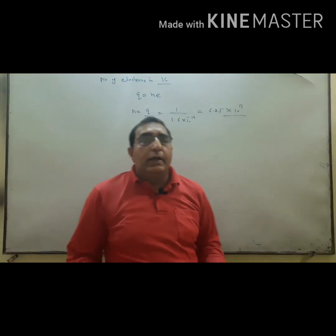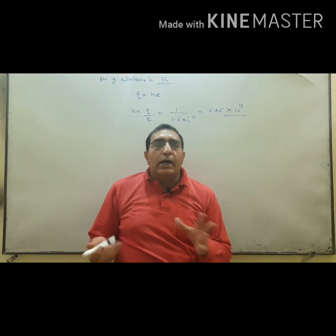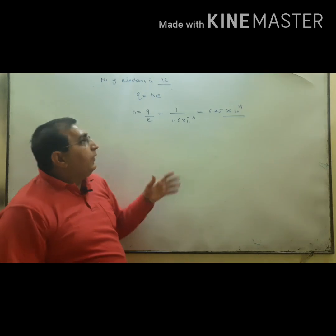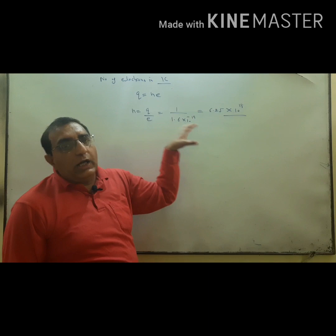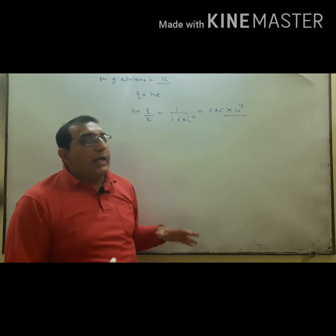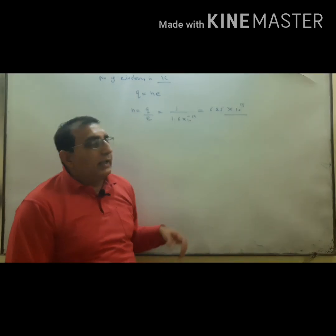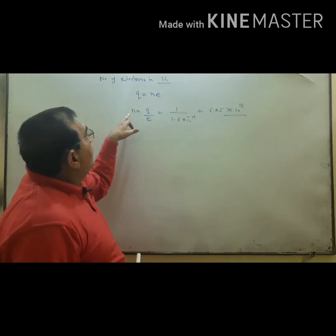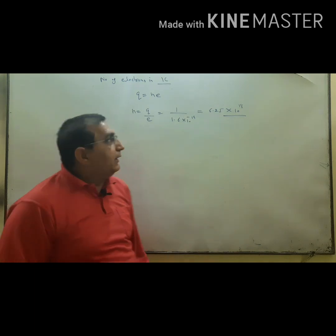What is charge? Charge is a physical quantity which tells how many electrons are transferred from one body to another. Positive charge indicates deficiency of electrons, and negative charge indicates excess of electrons present on that body. The number of electrons in one coulomb charge is 6.25 × 10¹⁸.